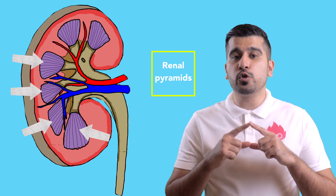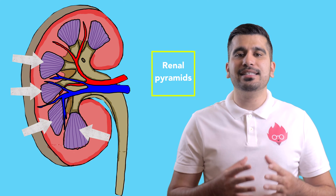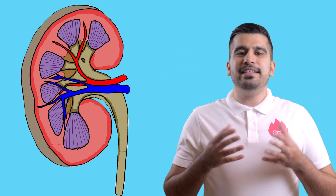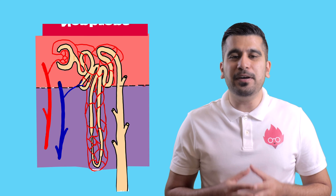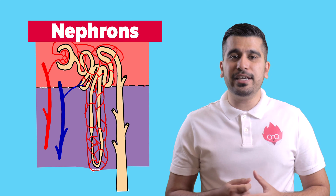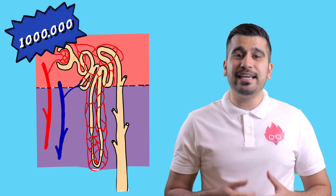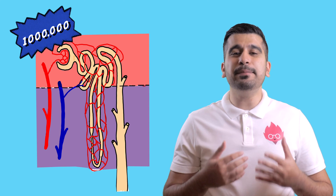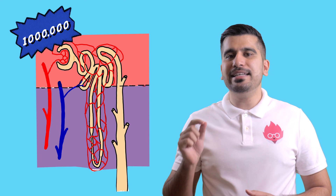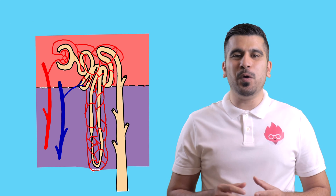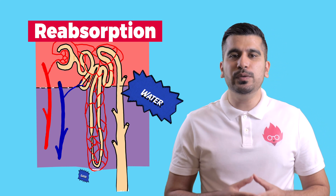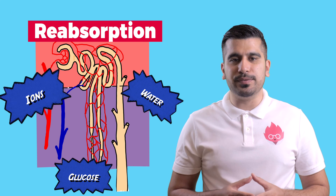These are triangular structures that contain a network of nephrons. Nephrons are the functional unit that make up a kidney. Each kidney contains over one million nephrons. They play an essential role in the reabsorption of water, glucose and ions.